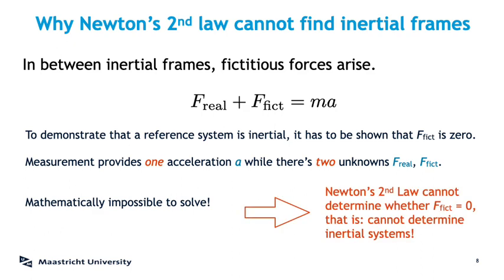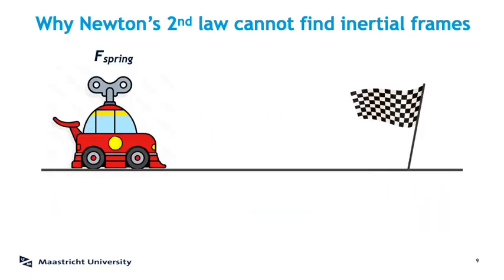This is actually a fun assignment to give to a classroom. You can ask students: can you come up with an experiment that, using only Newton's second law, reveals whether you are in an inertial system or not? They might come up with something like taking a wind-up car — the kind that has a spring inside that can be wound up, and as it unwinds it makes the car move along a track. Knowing the real forces that act on the mass, we can calculate using the second law at what time the car should cross the finish line, here designated by the flagpole. Then we do the experiment. If the car passes the flagpole at the calculated time, we know there was no fictitious force and we were in an inertial frame. And if the car does not pass the flag at the calculated time, we can deduce there was a fictitious force and we were not in an inertial frame.